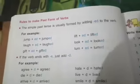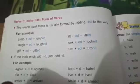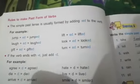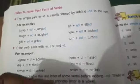Now, please turn your page, page number 50. What are the rules to make past form of verbs? So children, the simple past tense is usually formed by adding ed to the verb. For example, here.